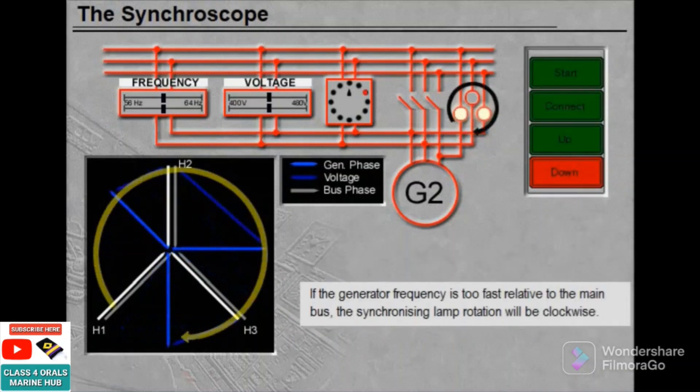If the generator frequency is too fast relative to the main bus, the synchronizing lamp rotation will be clockwise.